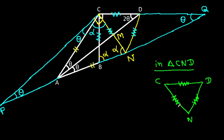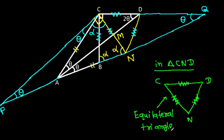Since CN is equal to CD and CD is equal to ND, this means it is an equilateral triangle. So these angles will all be 60 degrees. This angle is 60 degrees.